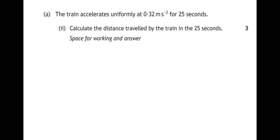Part two, calculate the distance traveled by the train in the 25 seconds. So this is an equations of motion question. To start with that, we write down SUVAT down the side of our page. S stands for distance or displacement and that's what we want to know, so we'll put a question mark next to it.